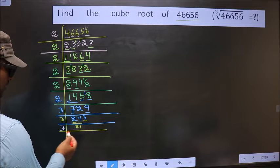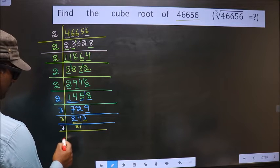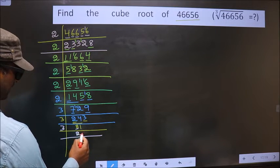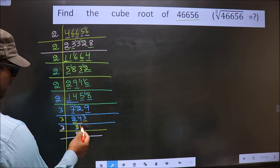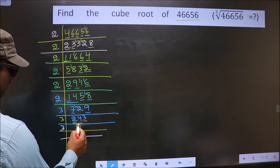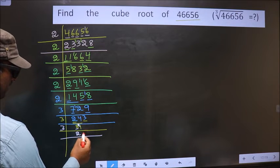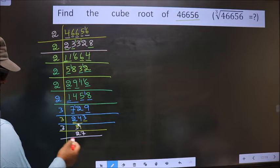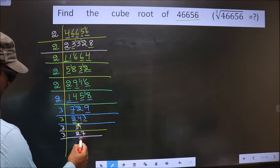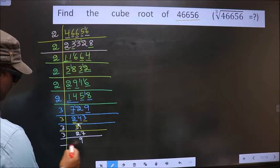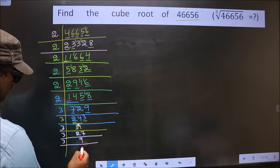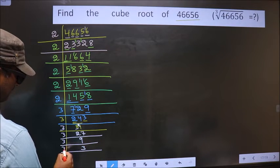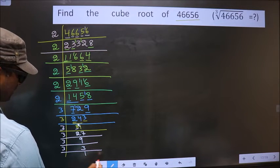Now we have 81. 8 plus 1 is 9, so we take 3. First digit is 8: 3×2=6; 8 minus 6 is 2, carried forward making it 21. 3×7 is 21. Next we have 27 — that is 3×9. Then 9 is 3×3. Finally 3 is a prime number — 3×1 is 3.